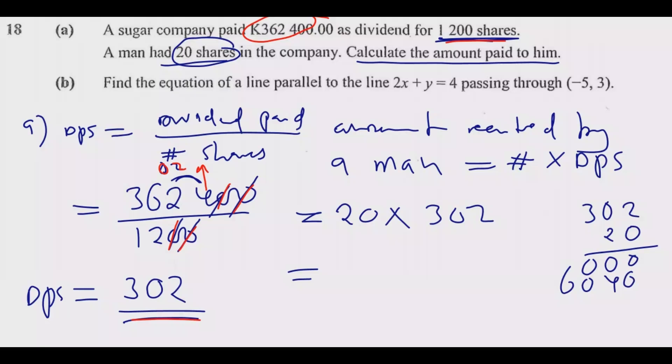302 multiplied by 20: this is 0, 0, 0, then 2, then 0, then 6. So we have 6,040 kwacha. This is the amount paid. Once you do that, you get these two marks.